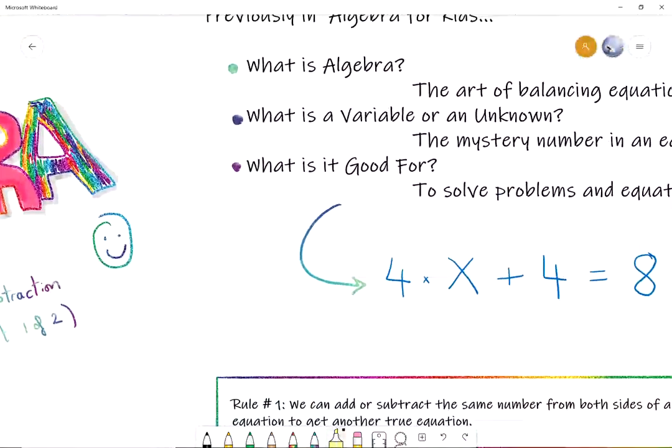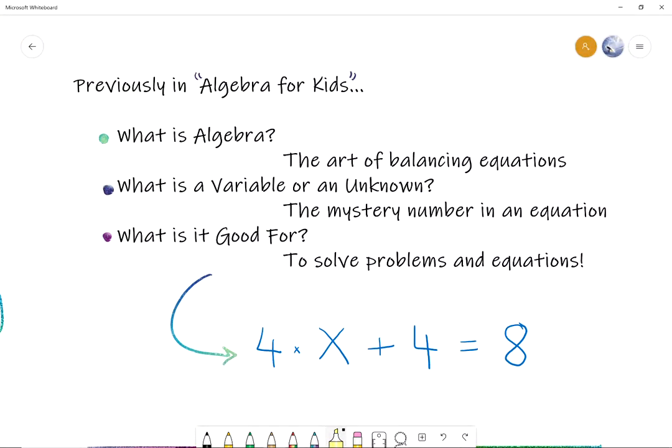Okay, so let's do a quick recap of what we've seen so far previously in algebra for kids. So we saw what is algebra. We said that algebra is the art of balancing equations and we learned what is a variable or an unknown. Natalie, remember what that is? The mystery number in an equation.